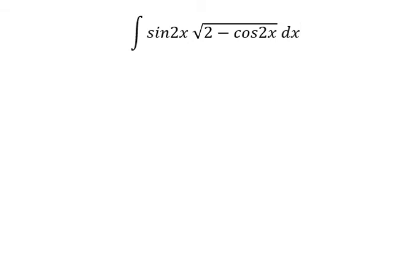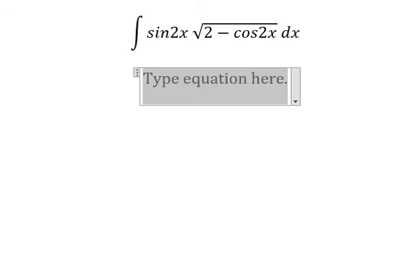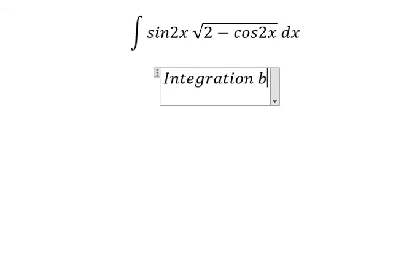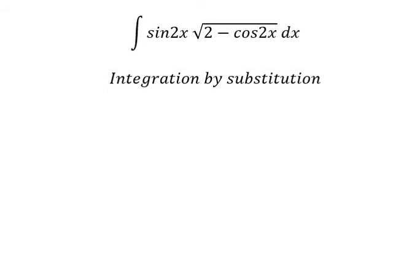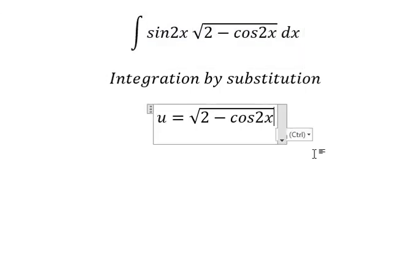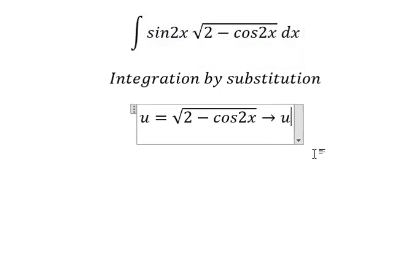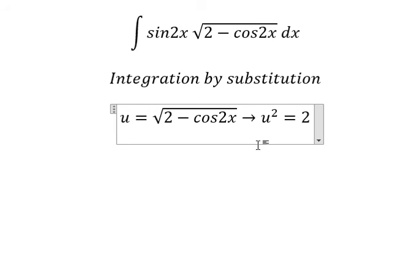Now we need to use integration by substitution. So we put u equals to the square root. We put the square for both sides so that we can cancel the square root.